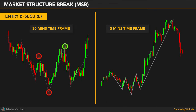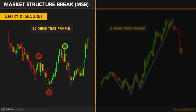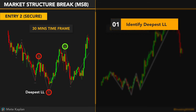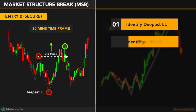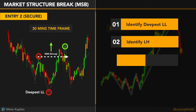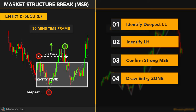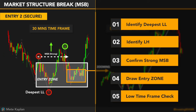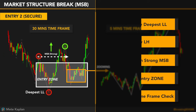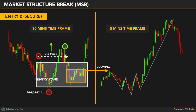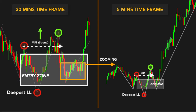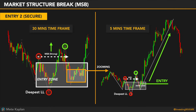Let's see an example. We are looking at the same ticker — on the left, we are looking at the 30-minute time frame, confirming our market structure break strategy: 1) identify the deepest lower low, 2) identify the lower high that creates the deepest lower low, 3) confirm a strong market structure break, 4) draw your entry zone between the lower high and the deepest lower low. When the price pulls back to our entry zone on the 30-minute time frame, you open the 5-minute time frame on the right, look at that area, apply the same market structure break technique, and enter the trade from the micro entry zone.